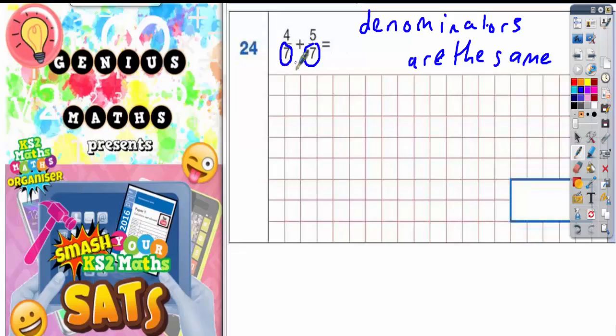But because the denominators are the same, it's like the unit that we're dealing with. So we're dealing with the unit of seven. So if we said four apples add five apples, the unit would be apples. So four apples and five apples would be nine apples.